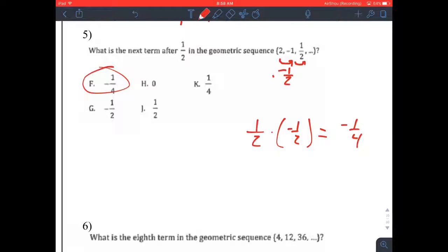So to sum up, multiplying each term by negative 1 half to get to the next term, so 1 half times negative 1 half is negative 1 fourth.